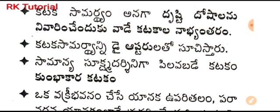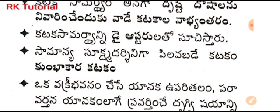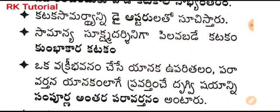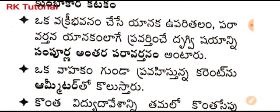The capacity of a lens to prevent defects is called its power, measured in diopters. A simple microscope is also called a magnifying glass or Kumbhakara lens. A prism that causes total internal reflection is called a totally reflecting prism.